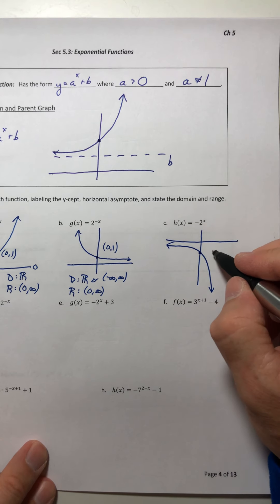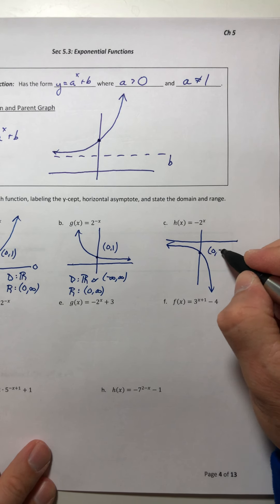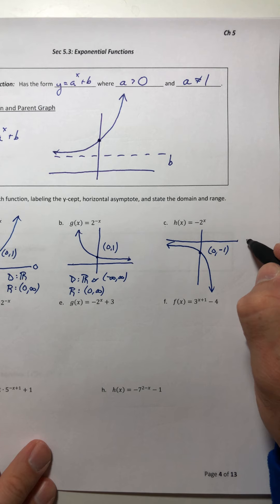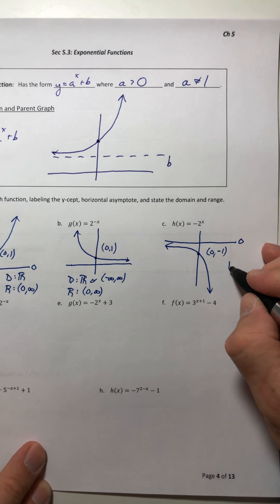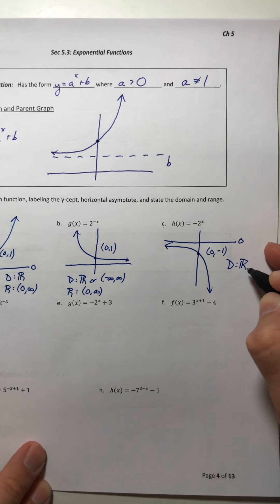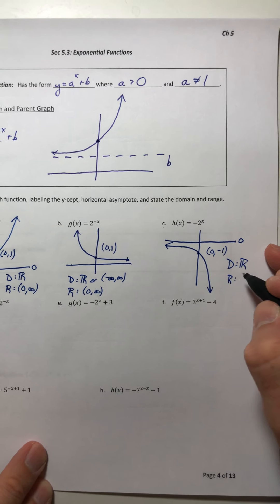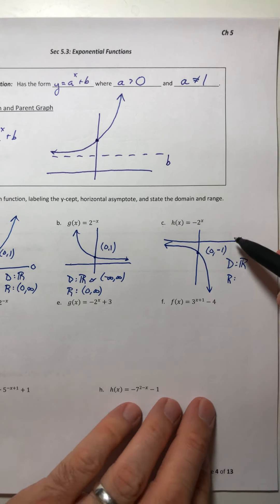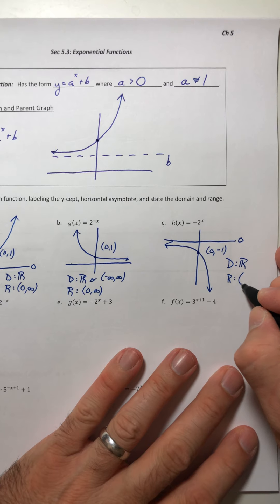You plug in zero for x, you get a negative 1. The horizontal asymptote is still at zero. Domain still all reals, but now the range is all the negatives, anything that was below your x-axis.